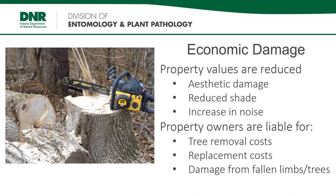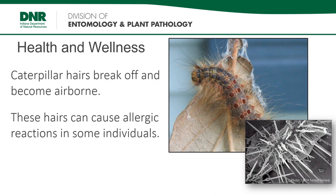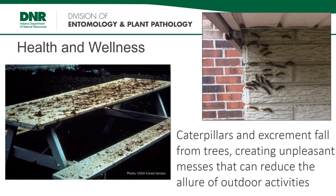Spongy Moth also has economic impacts. Trees play a critical role in our communities. When Spongy Moth kills trees, it changes how our neighborhoods feel, look, and sound. Additionally, property owners are responsible for the costs associated with tree removal and replacement, as well as the liability associated with falling limbs and trees. Spongy Moth also has the potential to affect health and wellness — a very small percentage of people are sensitive to the hairs of the Spongy Moth caterpillar, and contact can cause a rash similar to poison ivy. In very high populations, caterpillars and their excrement may fall from trees and cover sidewalks, picnic tables, and other surfaces, reducing the allure of backyards, parks, pools, and other outdoor recreational facilities.